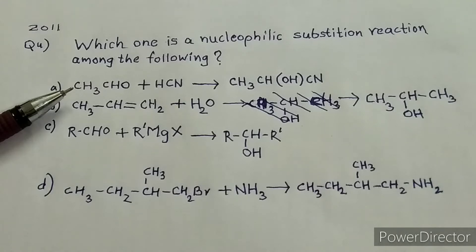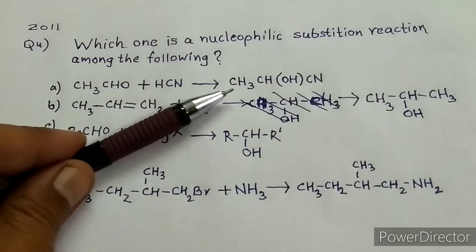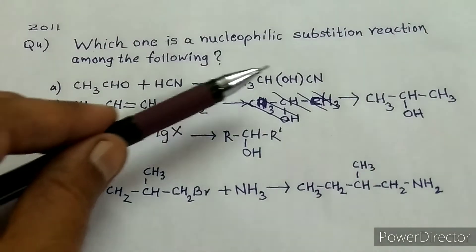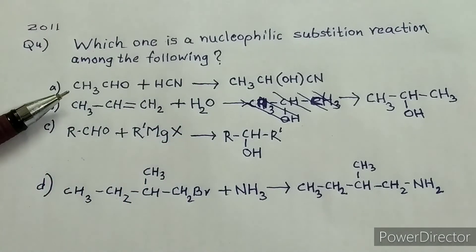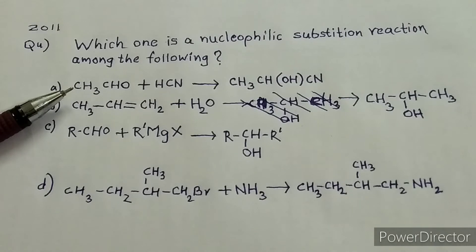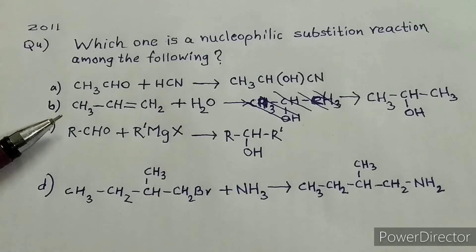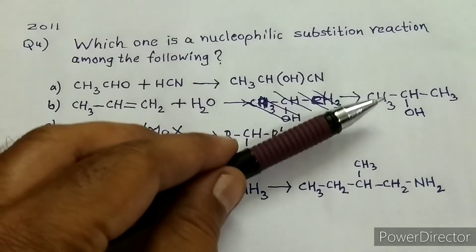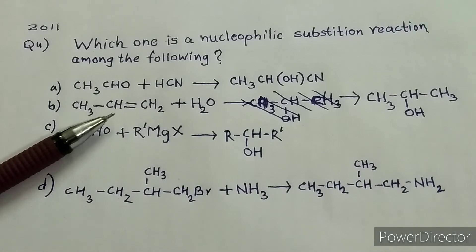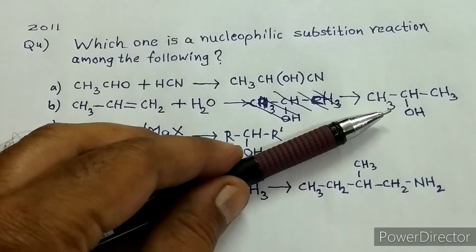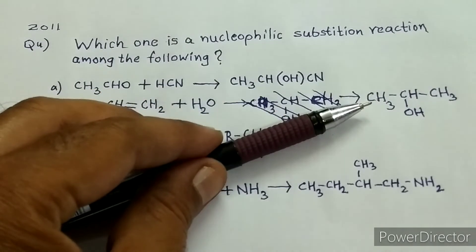In reaction A, the reactant is CH3CHO. All the atoms present in the reactant are also present in the product — nothing is removed from the reactant. Therefore, this is not a nucleophilic substitution reaction. In reaction B, water is added across the double bond: an H atom is added to the first carbon and an OH group is added to the second carbon.